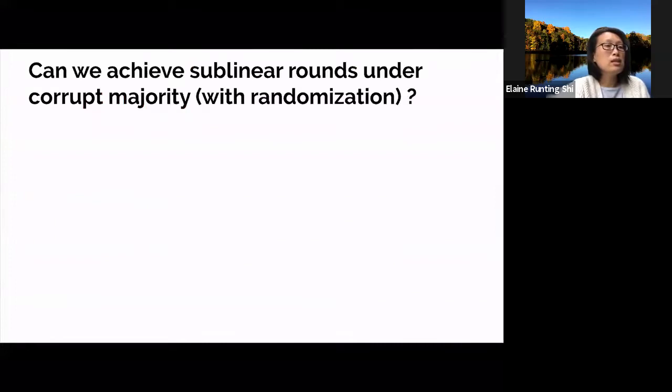To summarize, for the question we care about, basically nothing is known, even under only 51% corruption, despite decades of work on distributed consensus. So when we first started working on this problem, this was somewhat surprising.